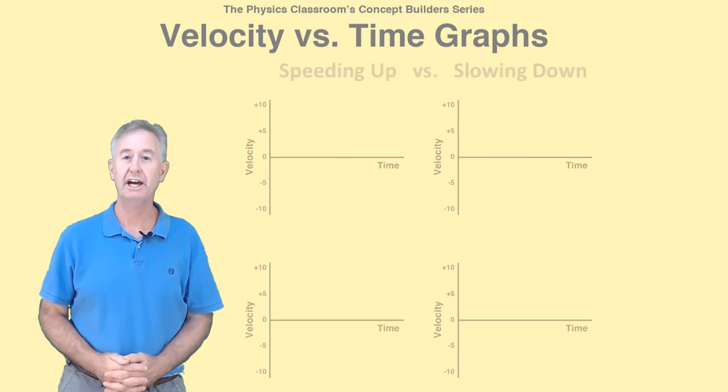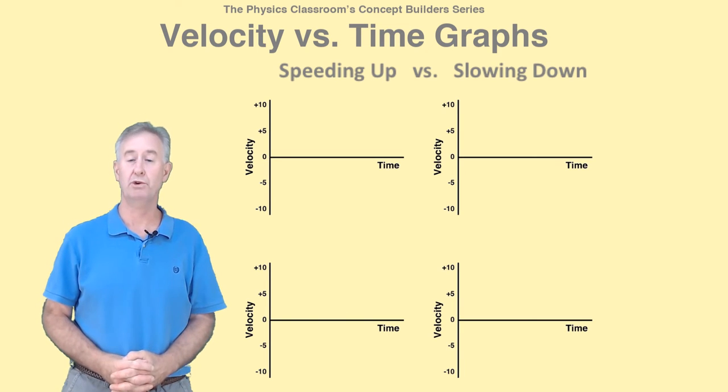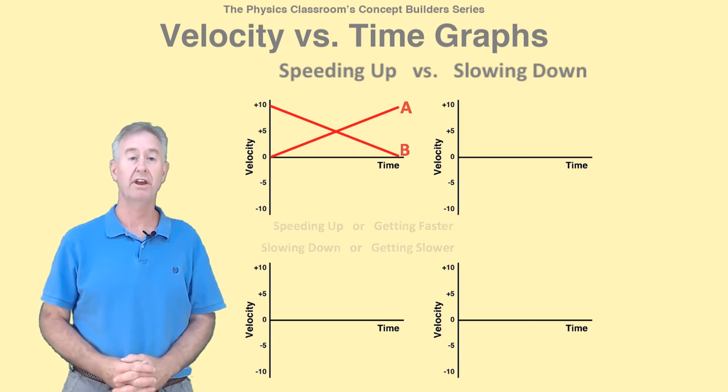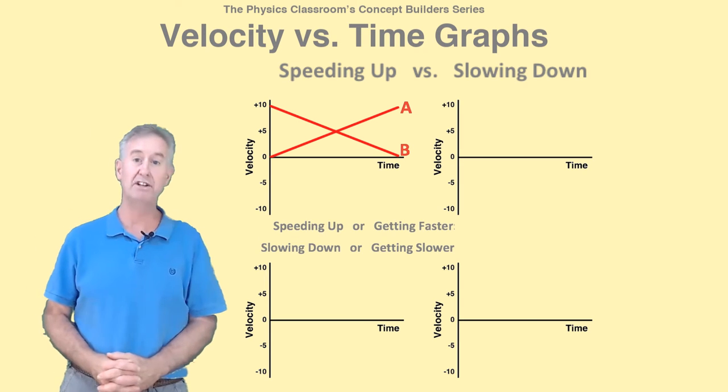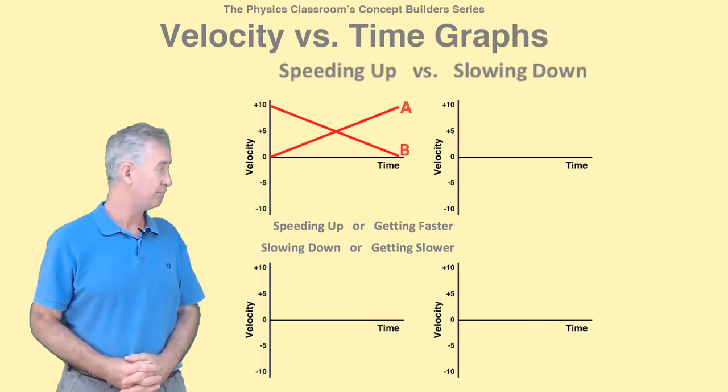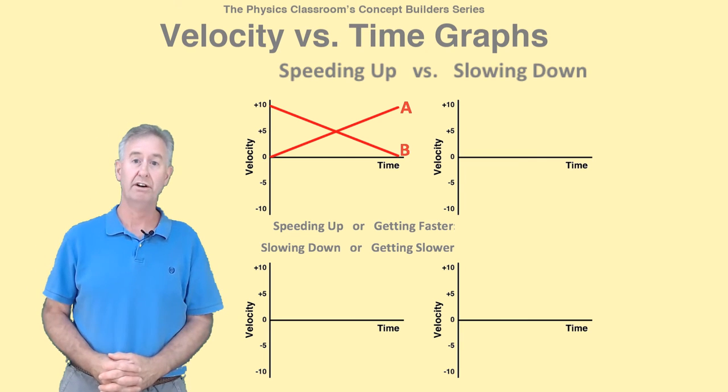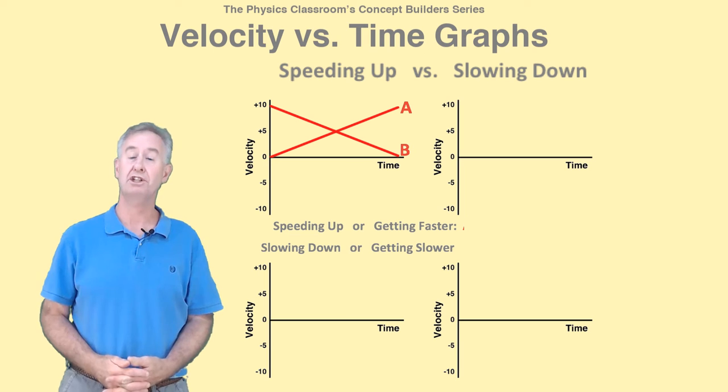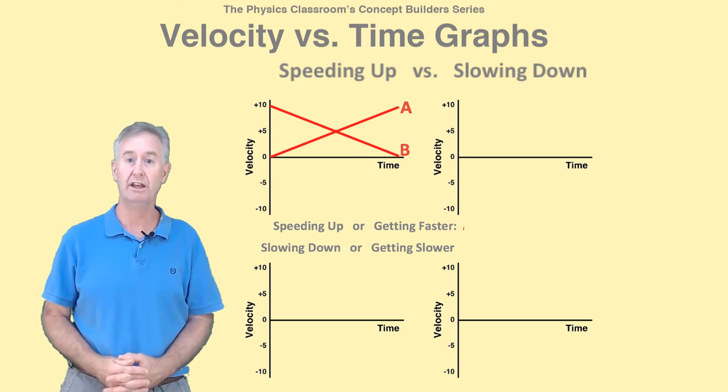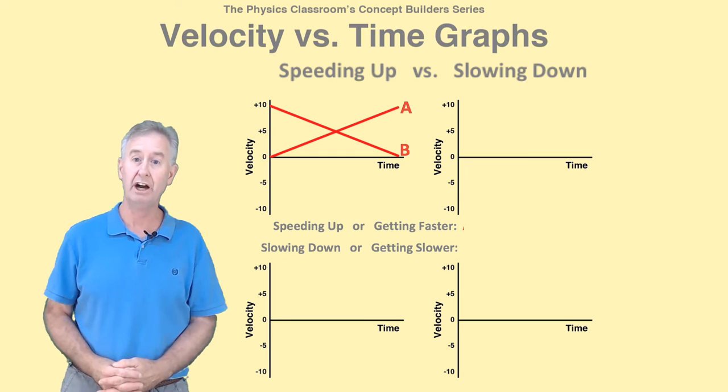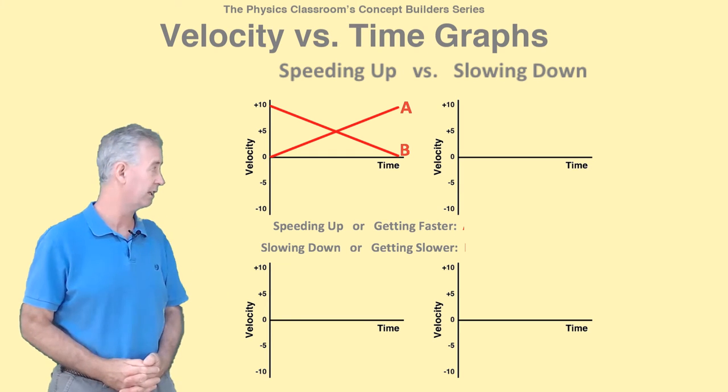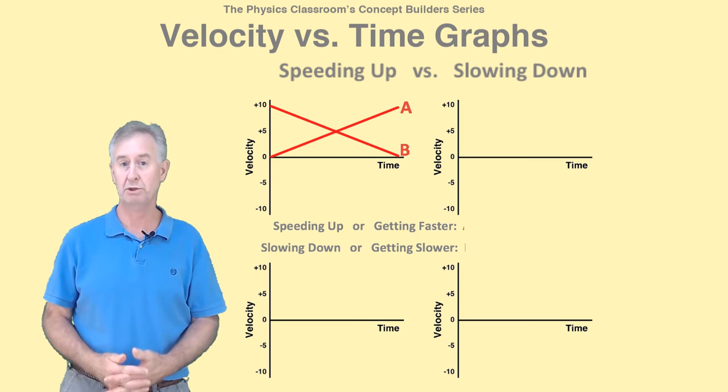Now let's contrast speeding up motions with slowing down motions, beginning with objects that move in the positive direction, having lines that are in the positive region of the graph. Object A is getting faster—it's speeding up. It starts at rest and finishes with a speed of 10 meters per second. Object B is slowing down or getting slower. It starts at 10 meters per second and eventually comes to a stop.